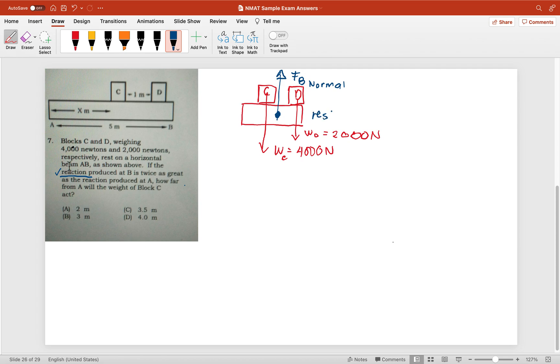Since this is at rest, therefore, the normal force of the beam is equal to the weight of C plus the weight of D. For every action, there is an equal and opposite reaction, the third law of motion. So this is 4,000 plus 2,000, which equals 6,000 N.